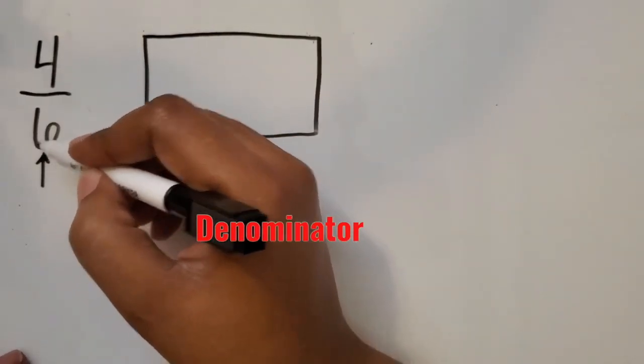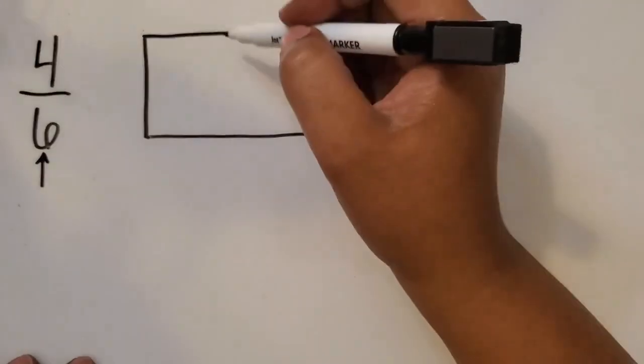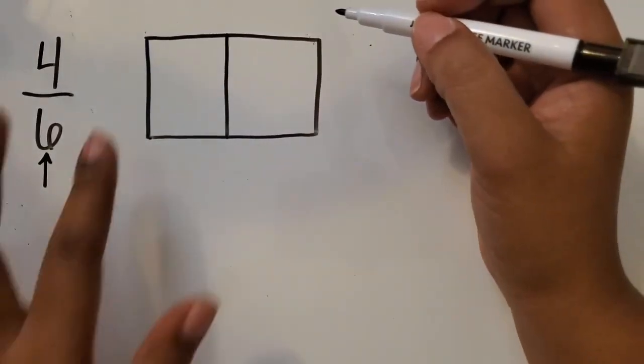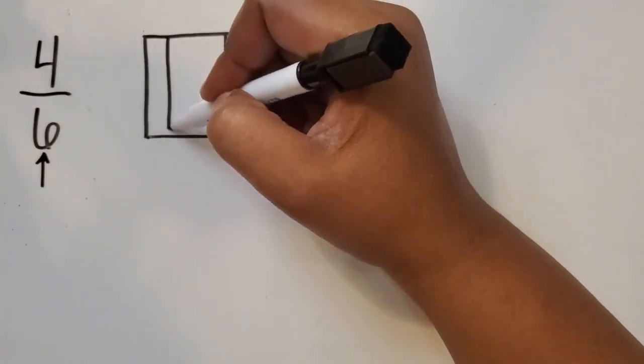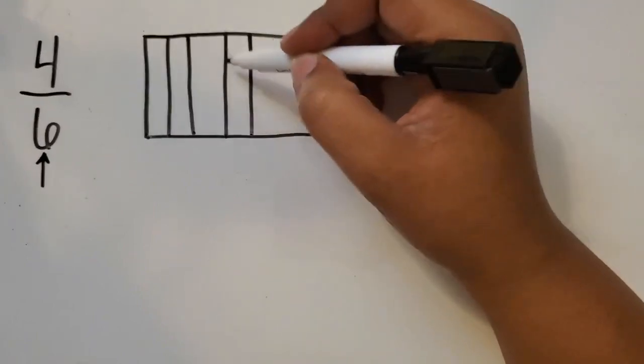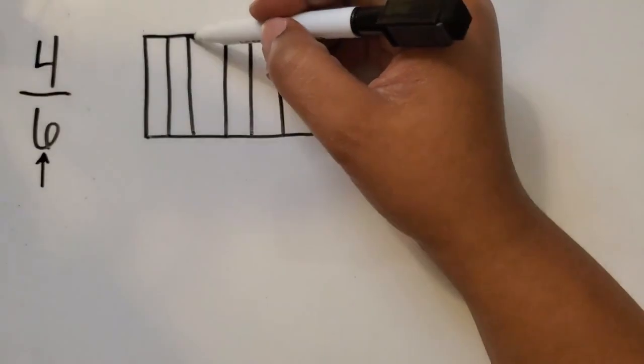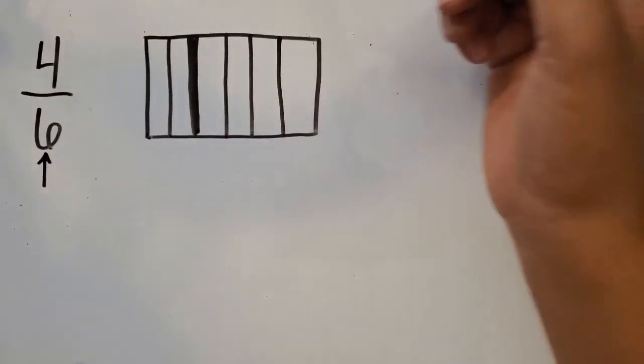We're going to start with the denominator. And that denominator tells us how many equal parts are needed to make up the whole. So what I'm going to do is partition or split the whole into 6 equal parts. And when drawing models, you want to get your spaces as close as possible. So this one's a little off.